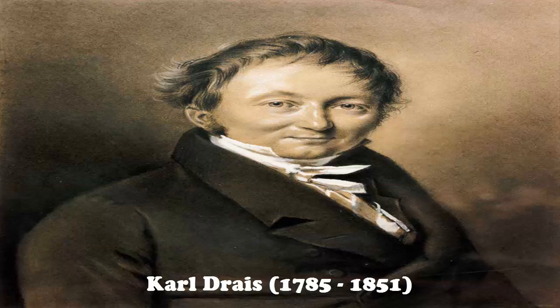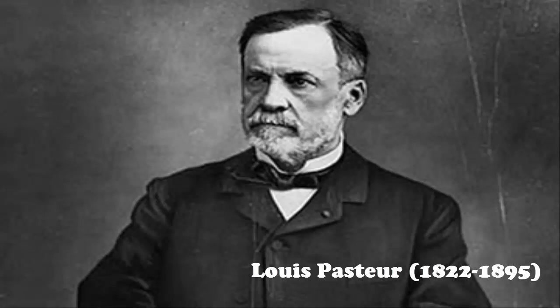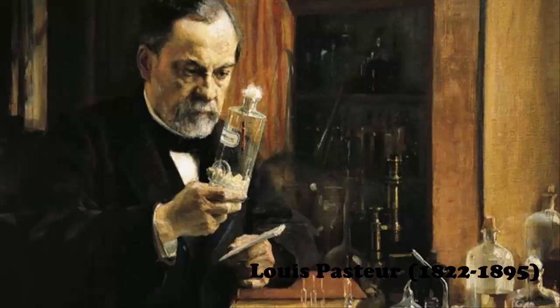Another inventor created the Running Machine, which was later called the Velocipede and is believed to be the forerunner of the bicycle and motorcycle. His invention represented the first means of transport to use the two-wheeler principle and was the starting point of mechanized personal transport. Louis Pasteur lived between 1822 to 1895. The famous French chemist and microbiologist came up with the process of pasteurization — heating a food, usually a liquid, to a certain temperature for a specific length of time and then cooling it instantly — to slow the development of microorganisms in food.